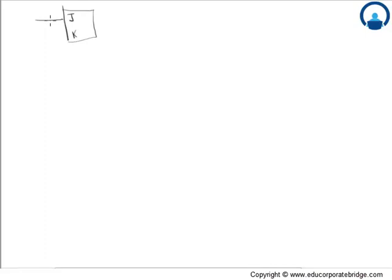Let's look at the circuit diagram or block diagram of T flip-flops. This is the input — one end will be given J and the other end will be given K. We are working with T flip-flops corresponding to JK flip-flop, since T flip-flop has only one input. It has two outputs: Q and Q-bar.